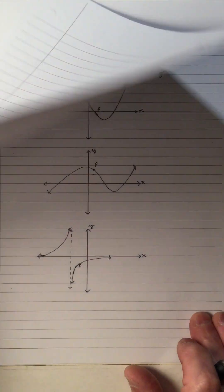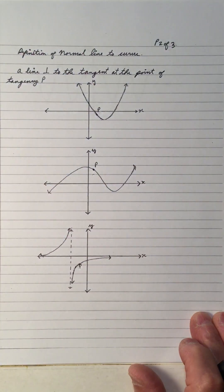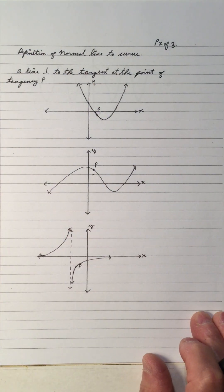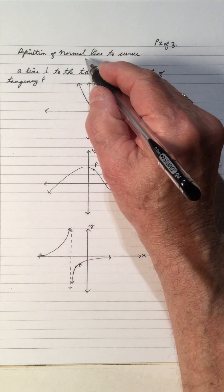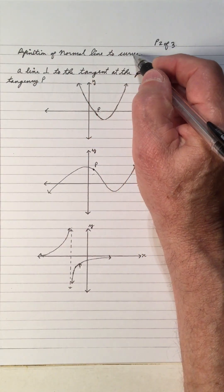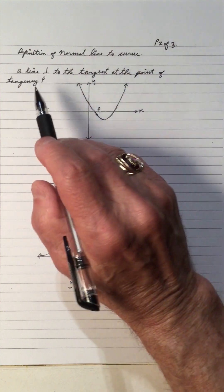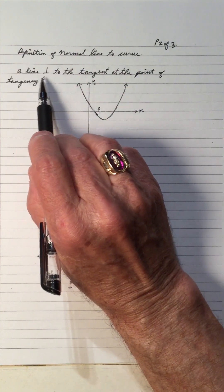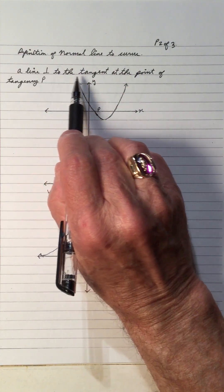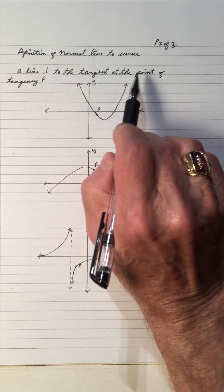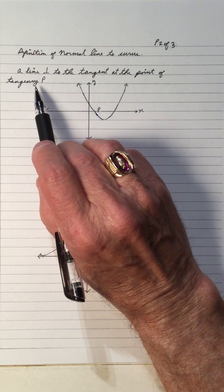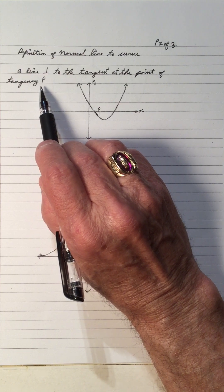Hi, welcome to my video on the definition of a normal line to a curve. The definition of a normal line to a curve: a line perpendicular to a tangent at the point of tangency P.